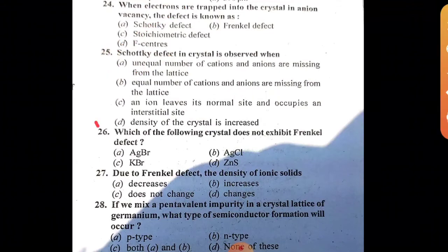Question 26: Which of the following crystals does not exhibit Frenkel defect? AgCl, AgBr, AgI, and zinc sulfide all show it, but KBr does not. KBr shows Schottky defect instead. So the right option is C.